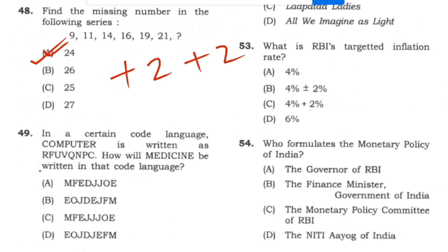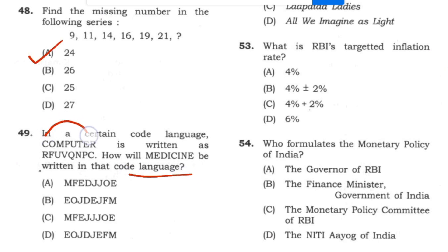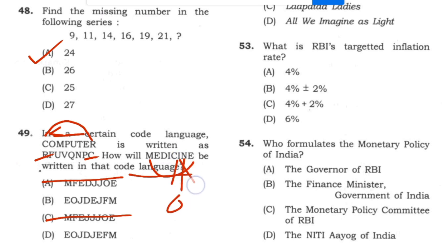Question 49: In a certain code language, 'computer' is written as a coded form. How will 'medicine' be written in that code language? Applying the same coding rule, answer: option A, number 2.